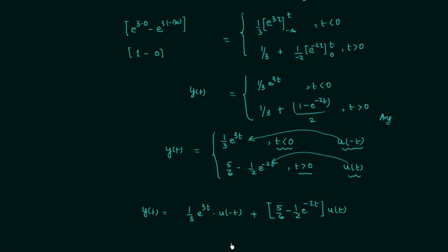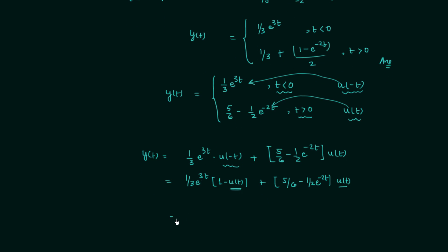We can further simplify using the property that u(t) + u(−t) = 1, so u(−t) = 1 − u(t). Substituting: Y(t) = (1/3)e^(3t)·(1 − u(t)) + [5/6 − (1/2)e^(-2t)]·u(t). Taking u(t) common, we get Y(t) = e^(3t)/3 + [−e^(3t)/3 + 5/6 − (1/2)e^(-2t)]·u(t). All these forms are correct; based on the given options you choose the matching form.